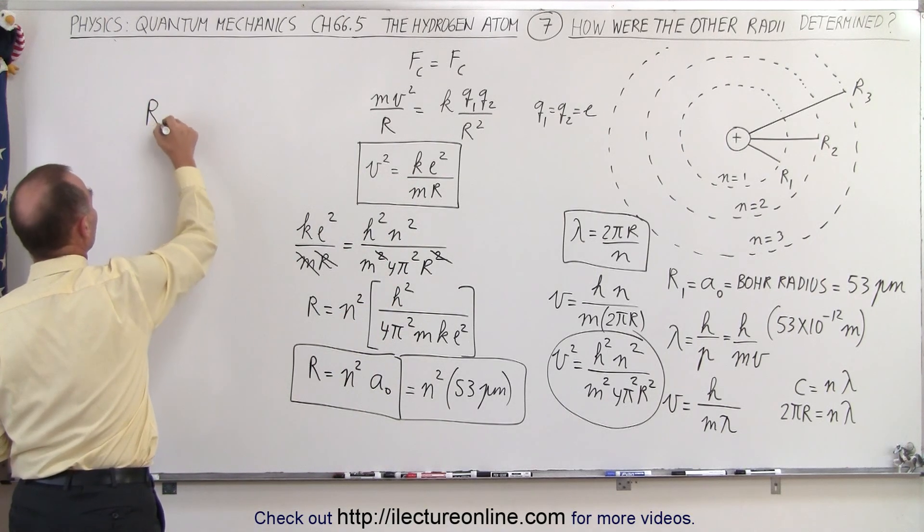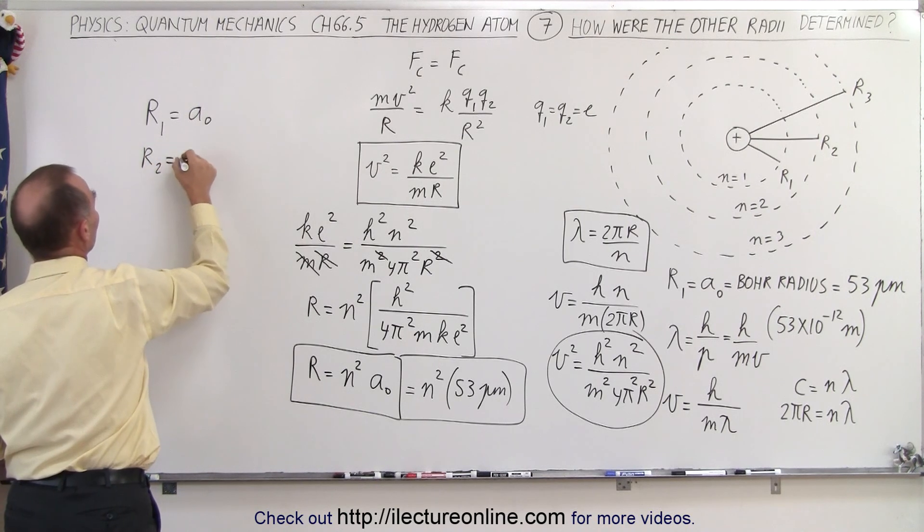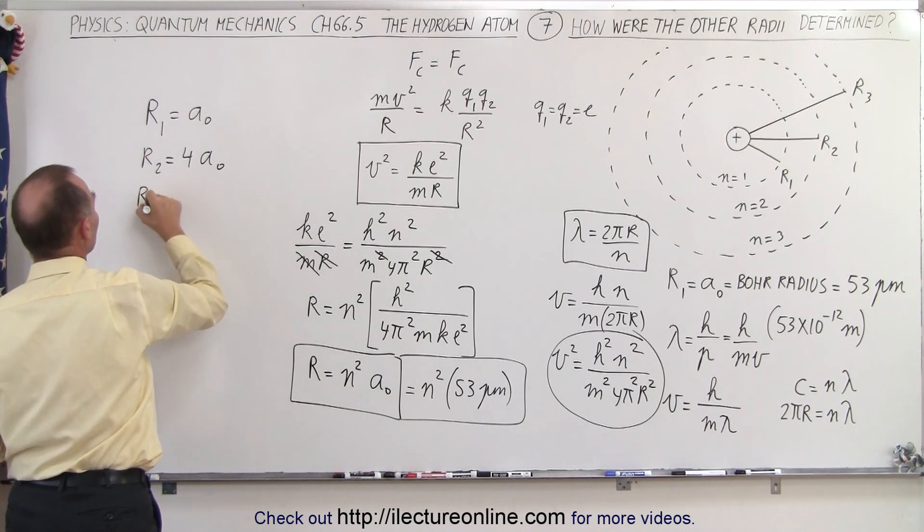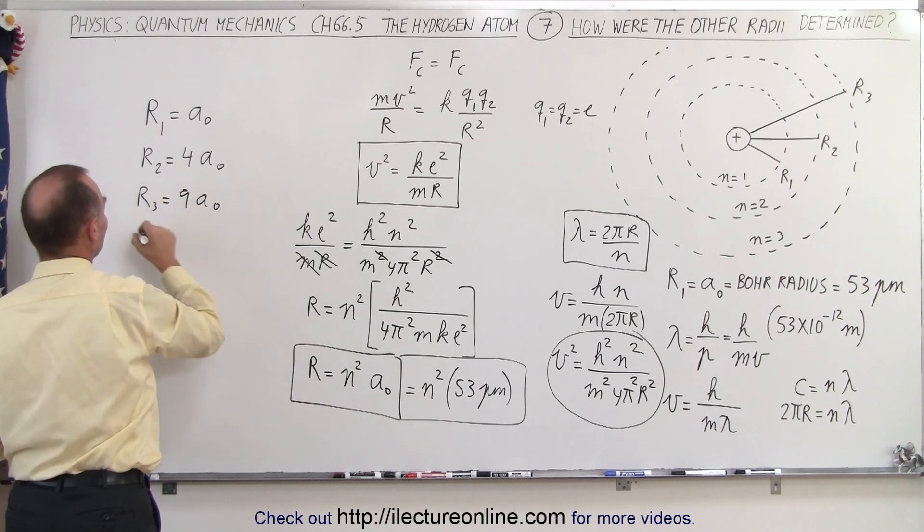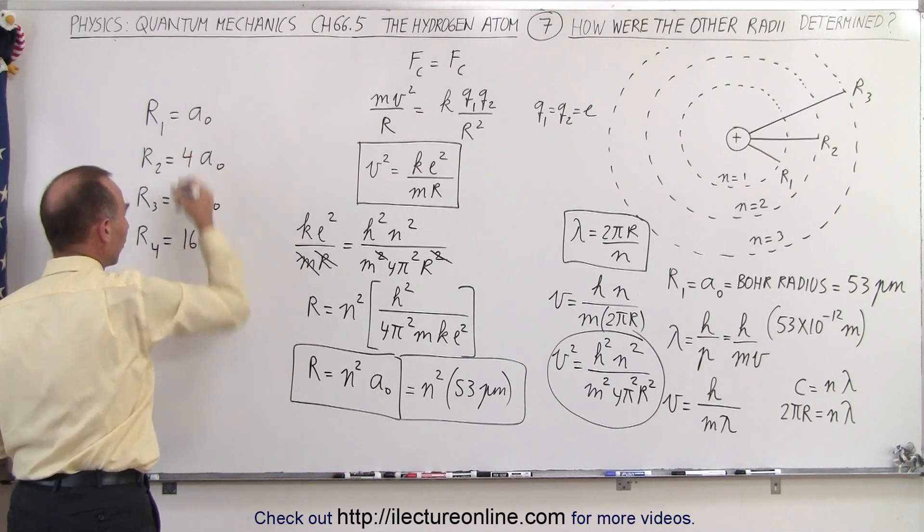In other words, we could say that the radius of the first orbit is equal to a sub nought, the radius of the second orbit is going to be 4 times a sub nought, the radius of the third orbit is going to be 9 times a sub nought, the radius of the fourth orbit is going to be 16 times a sub nought and so forth.